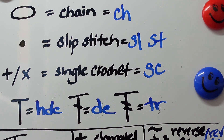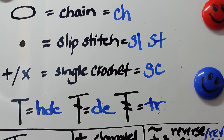Let's start with the review. At the top we see that oval-shaped circle that stands for the chain stitch, and its abbreviation is ch. Moving on, the solid dot represents the slip stitch and its abbreviation is sl st. Next, the plus or the x — either symbol can be used — and both stand for the single crochet, its abbreviation is sc.